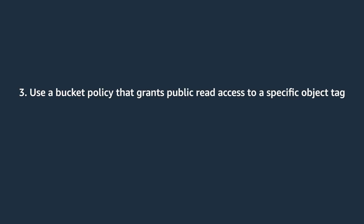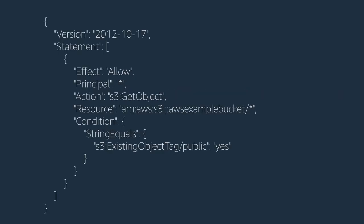The third way to make some objects public in your bucket is to use a bucket policy. Use a bucket policy that grants public read access to a specific object tag. First, add a bucket policy that allows public read access to any objects with a specific tag. For example, this policy allows public read access for any object that's tagged with the key-value pair public:yes. Then add the tag to the objects that you want to be publicly readable. You can add object tags using the Amazon S3 console or the AWS CLI.